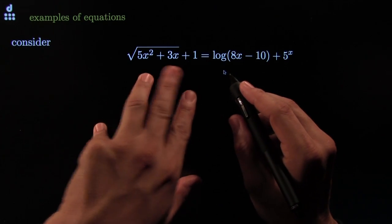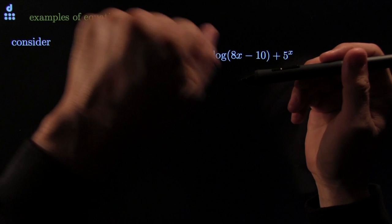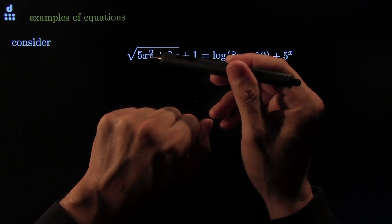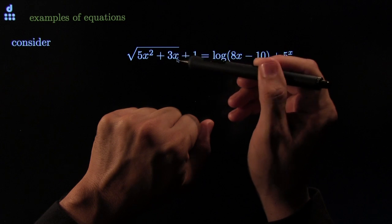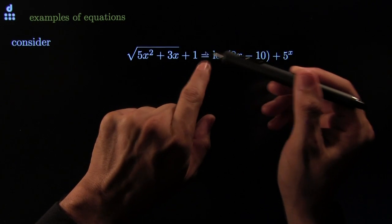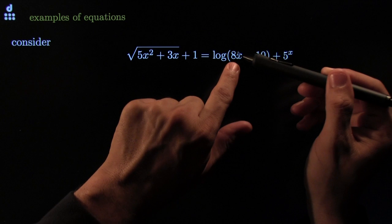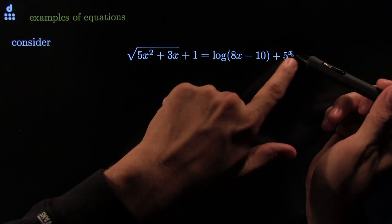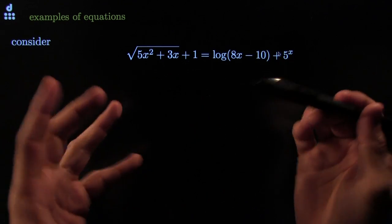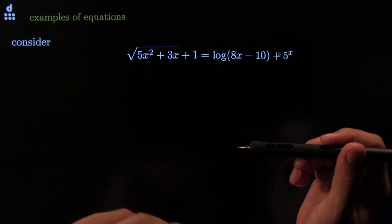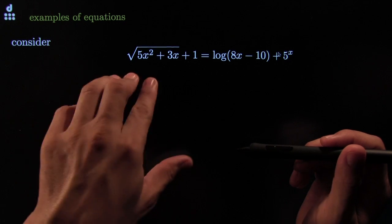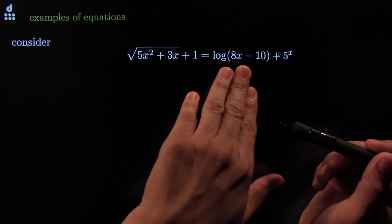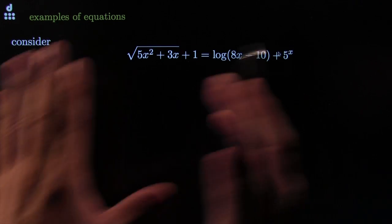Think about this. How about this for a party trick? You could come up to your friend and say, Hey, I've got a number in my hand. Can you guess what it is? I'll give you a hint about the number. If you take the number times itself, and then multiply it by 5, and add 3 times the number, and then take the square root, and you add 1 to it, you get exactly the same as multiplying by 8, subtracting 10, taking the logarithm of that, and then adding 5 raised to the same number. Can you guess what the number is? And you say, Whoa! Take it easy. But that's what an equation is. It's an incredible hint about some number.